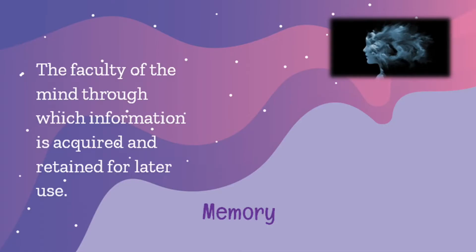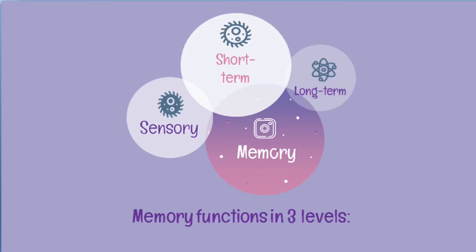Another significant term is memory. It is the faculty of mind through which information is acquired and retained for later use. Human memory is also limited and selective. It lacks information to be retained and discards those that are deemed irrelevant and useless. Our memory functions in three levels: sensory, short-term, and long-term.